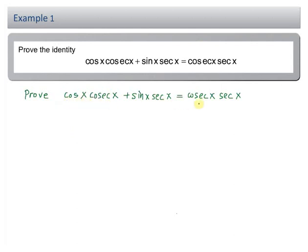To prove this identity, the first step is to start with the more complicated side. So in this example it should be the left hand side.